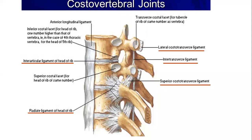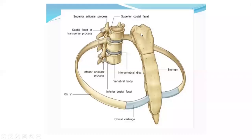The next joint of the thoracic wall is the costo-chondral joint. The name is self-explanatory: it is the joint formed between the rib and the cartilage. The anterior end, or sternal end, of the rib articulates with the lateral end of the costal cartilage to form the costo-chondral joint. This joint is primary cartilaginous in type and is bounded by the periosteum. Generally, no movements take place at this joint.